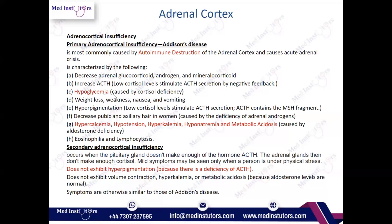Clinical features of Addison's disease include: hypoglycemia (no cortisol means no gluconeogenesis), weight loss, hyperpigmentation due to increased ACTH, decreased pubic and axillary hair, hypercalcemia, hypotension, hyperkalemia (because aldosterone is no longer excreting potassium), hyponatremia (sodium is not being reabsorbed by aldosterone), metabolic acidosis due to hyperkalemia leading to hydrogen ion retention, as well as eosinophilia and lymphocytosis.